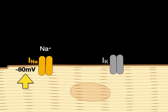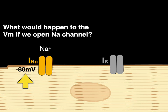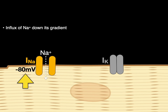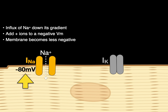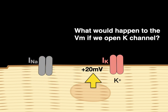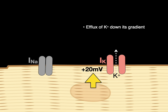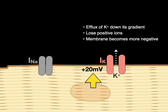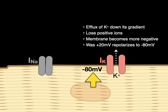Here is a contractile cardiomyocyte — it's got a VM of negative 80 millivolts. What would happen to the VM if we open the sodium channel? There's an influx of sodium down its gradient. We've added positive ions to a negative VM, so the membrane becomes less negative or more positive. The VM was negative 80 millivolts and now it depolarizes to positive 20 millivolts. What would happen to this VM if we open a potassium channel at this point? There's an efflux of potassium down its gradient — we lose positively charged potassium ions leaving negatively charged anions behind. The membrane becomes more negative. So the VM was positive 20 millivolts and it now repolarizes to negative 80 millivolts.